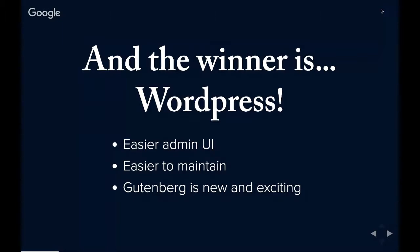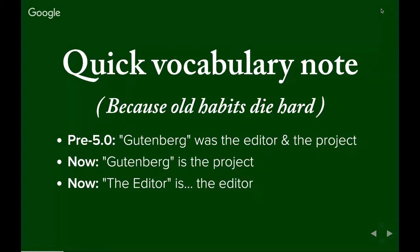Before I move on, I want to take a quick vocabulary note. Gutenberg, throughout all of the pre-WordPress 5.0 life, the term Gutenberg was referred to as both the editor and the project of creating the editor. But now the WordPress core team is trying to decouple that, because Gutenberg is now part of WordPress core as of 5.0. The content editor is really just called the editor, and Gutenberg is now being referred to as the project of creating the editor. I've been so used to calling Gutenberg both the project and the editor that I'm probably going to slip — old habits die hard — so just bear with me on the terminology.